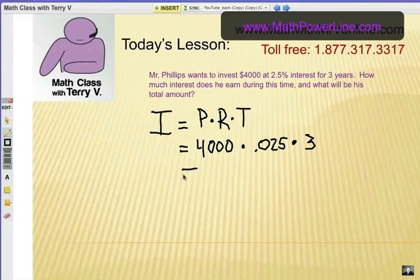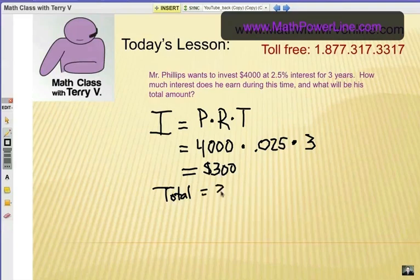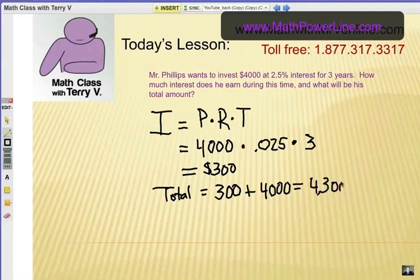So we put that in the calculator and we are going to get $300. Very interesting. Now again, that's the interest. So the total amount would be the $300 earned for Mr. Phillips at the end of three years plus the principal, the amount of money he started with. So $300 plus $4,000 would be $4,300. So if the total is asked for, you just add it on. Pretty simple example. Now let's look at some more.